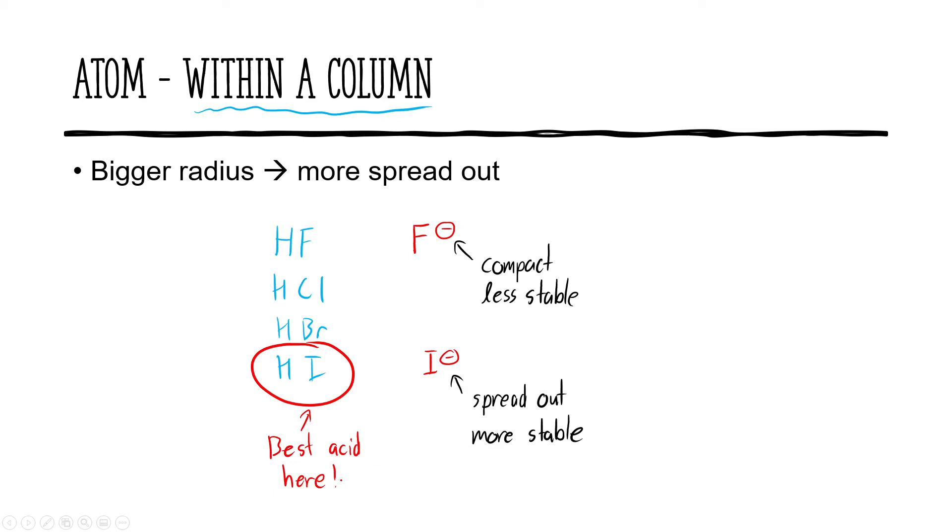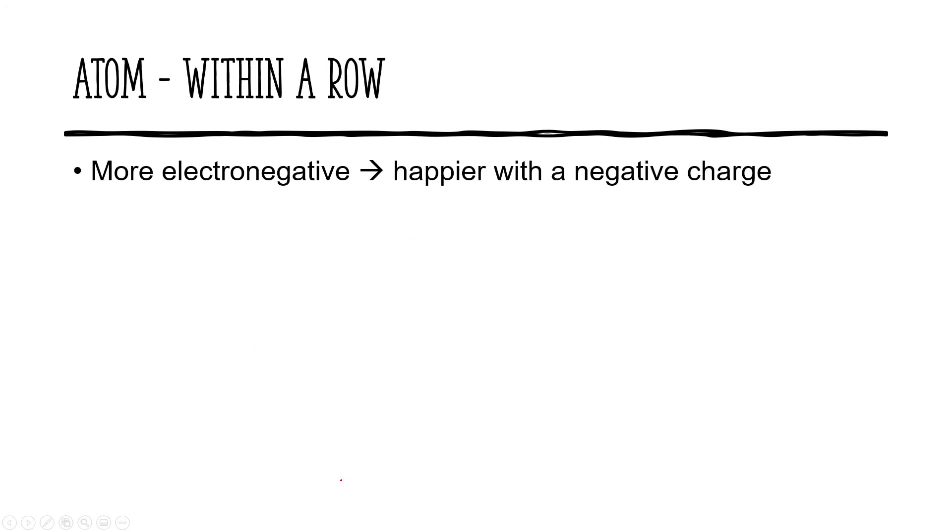We have a different trend within a row. Within a row, electronegativity is the main component. So if we have something like carbon, nitrogen, oxygen, and fluorine.